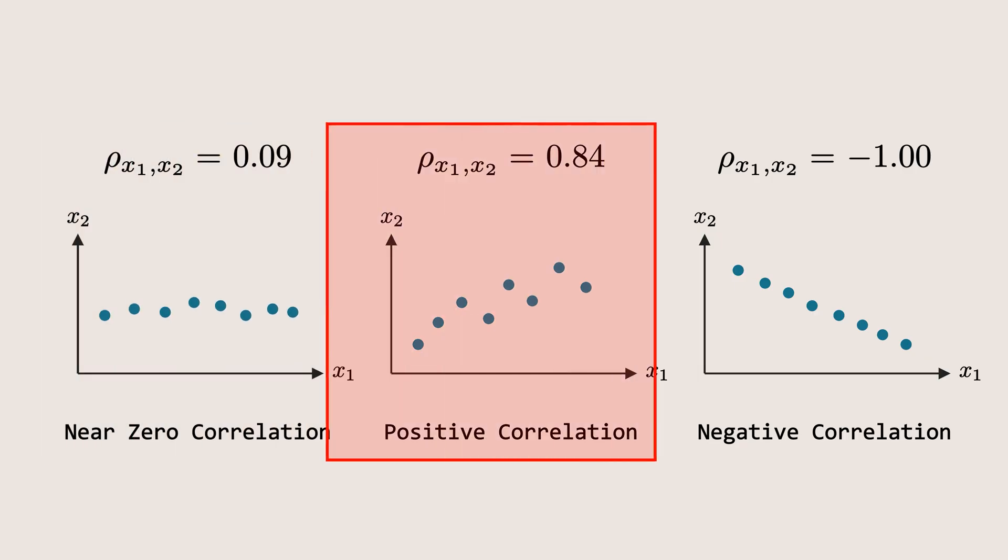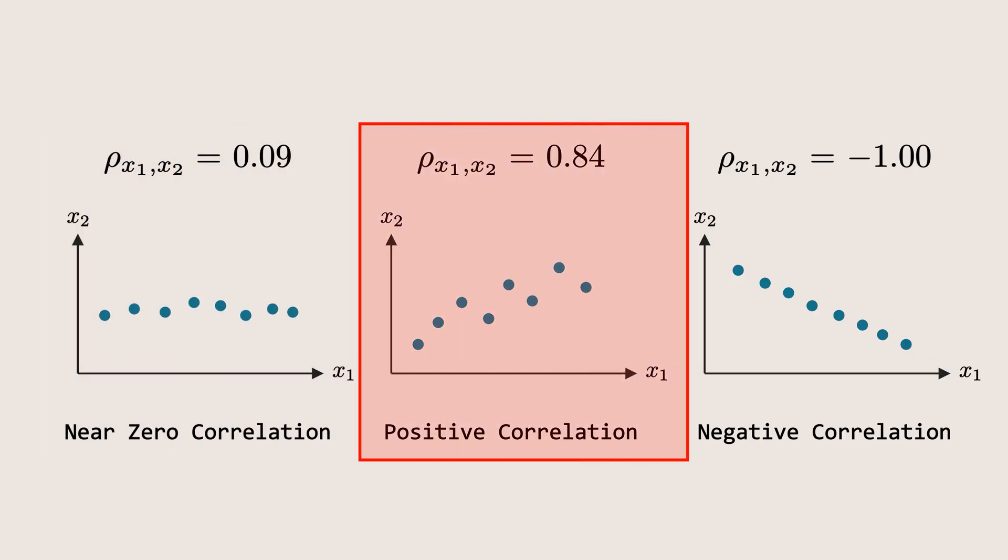If the correlation is close to positive 1, it indicates a strong positive relationship. As one feature increases, the other tends to increase as well.